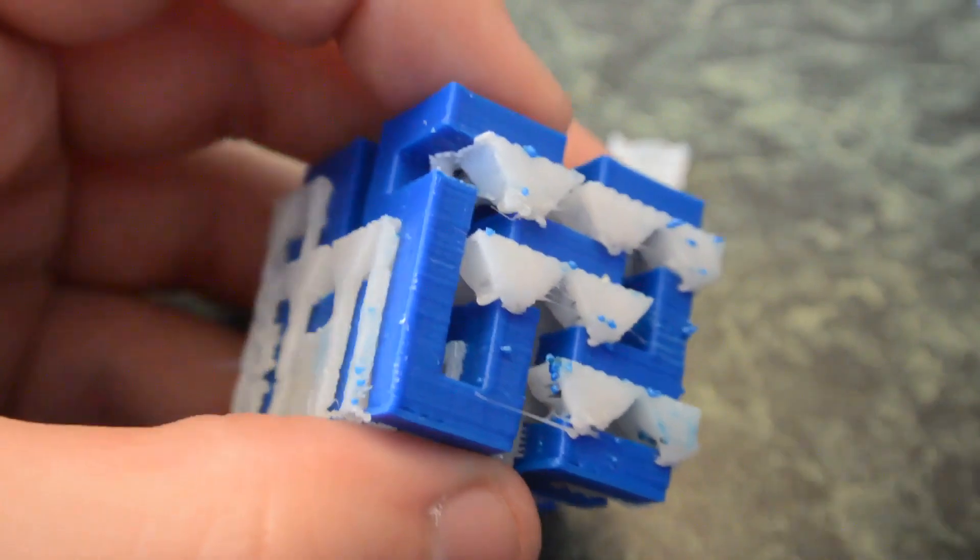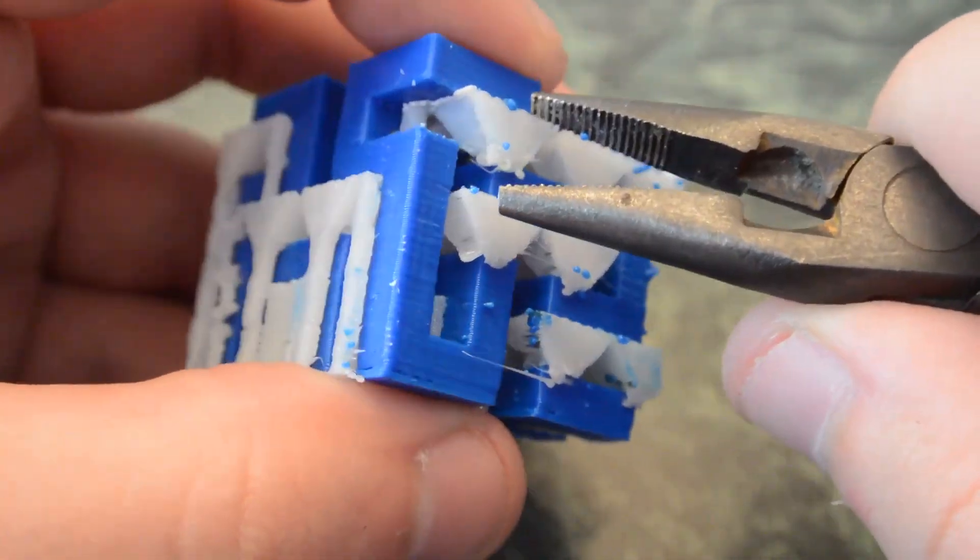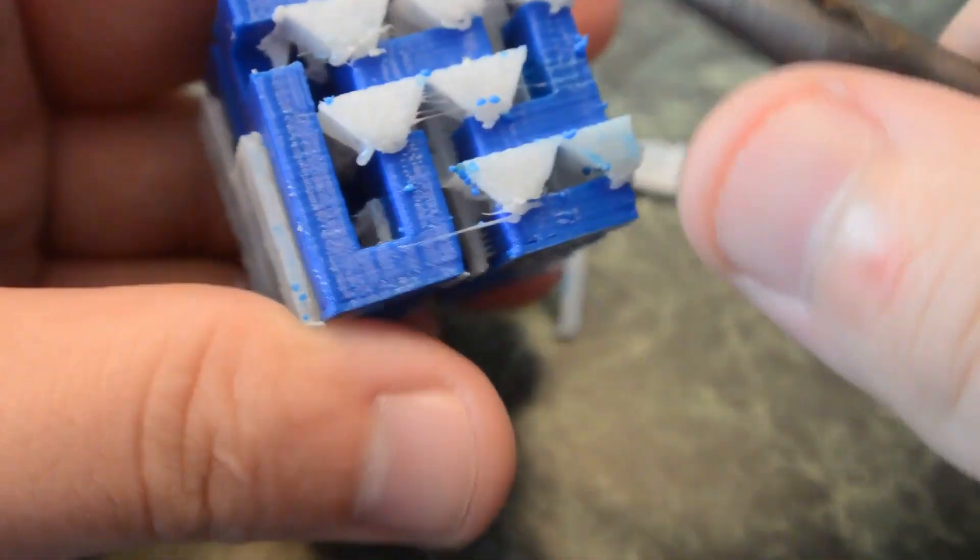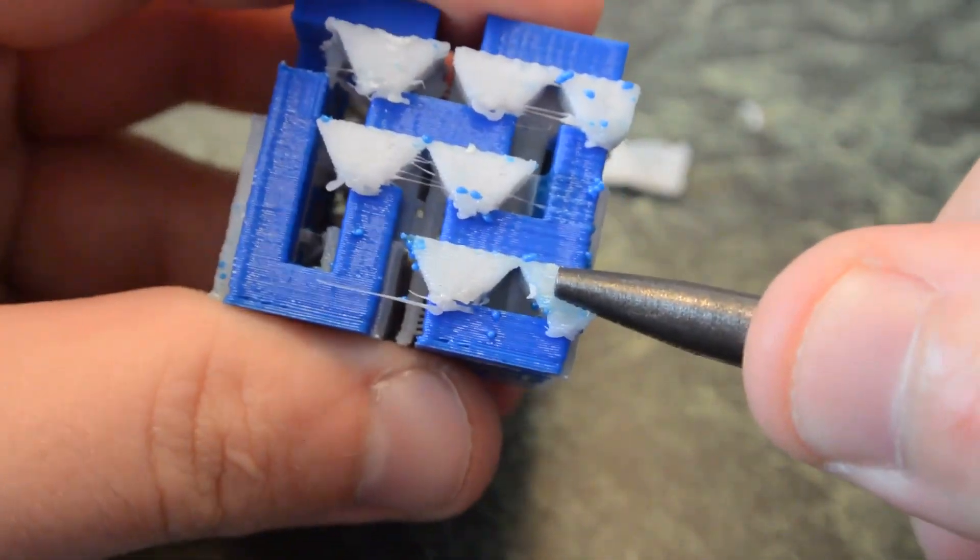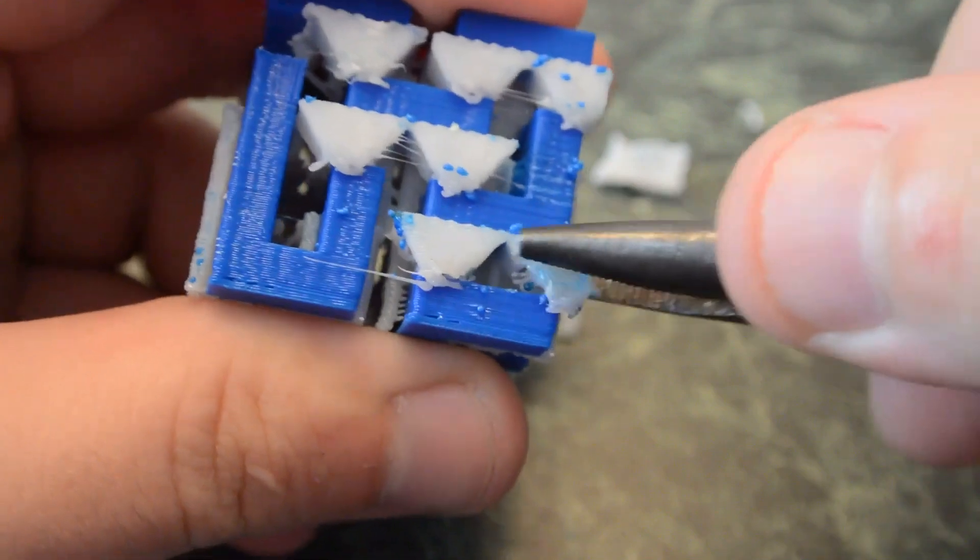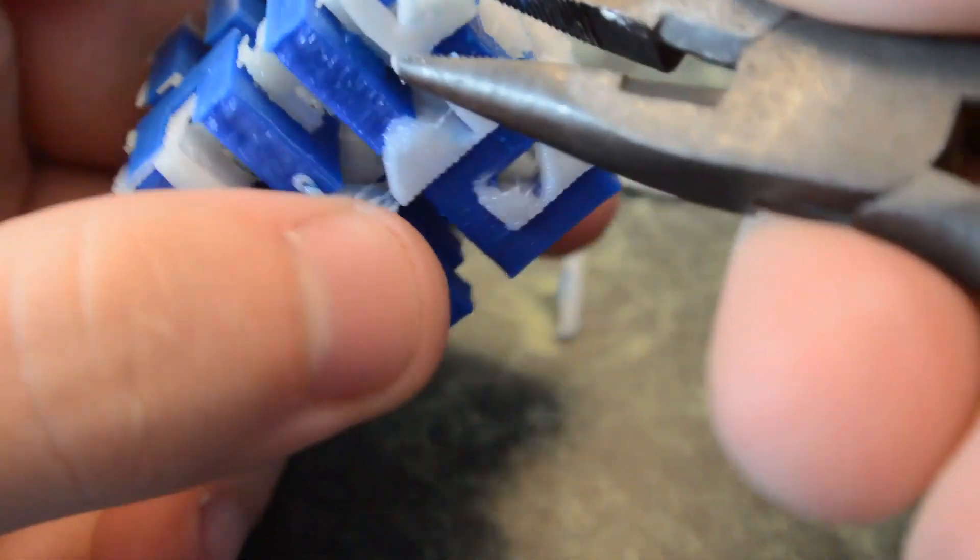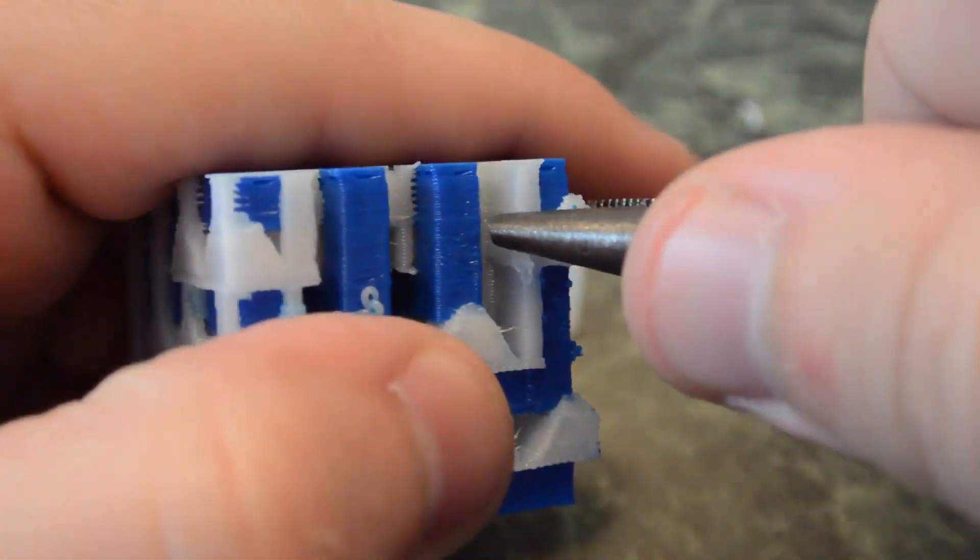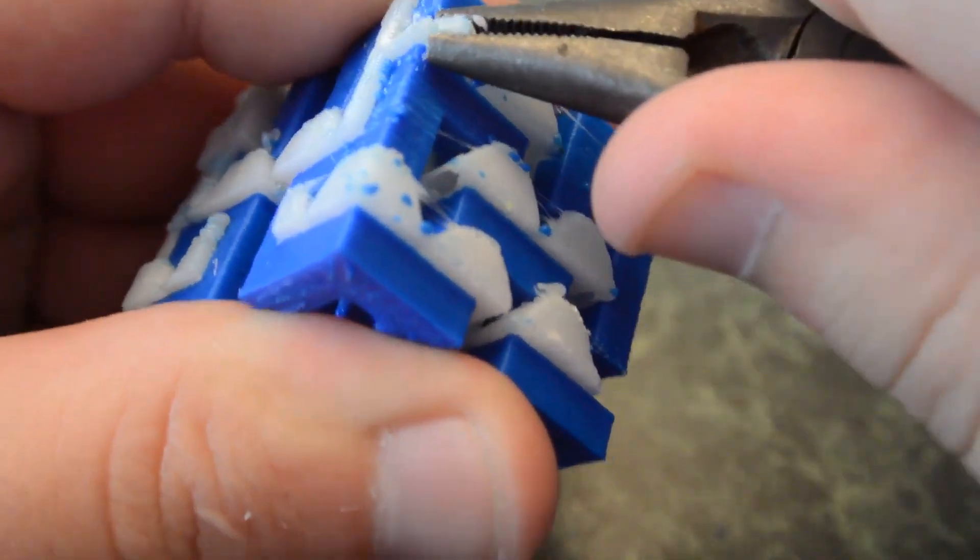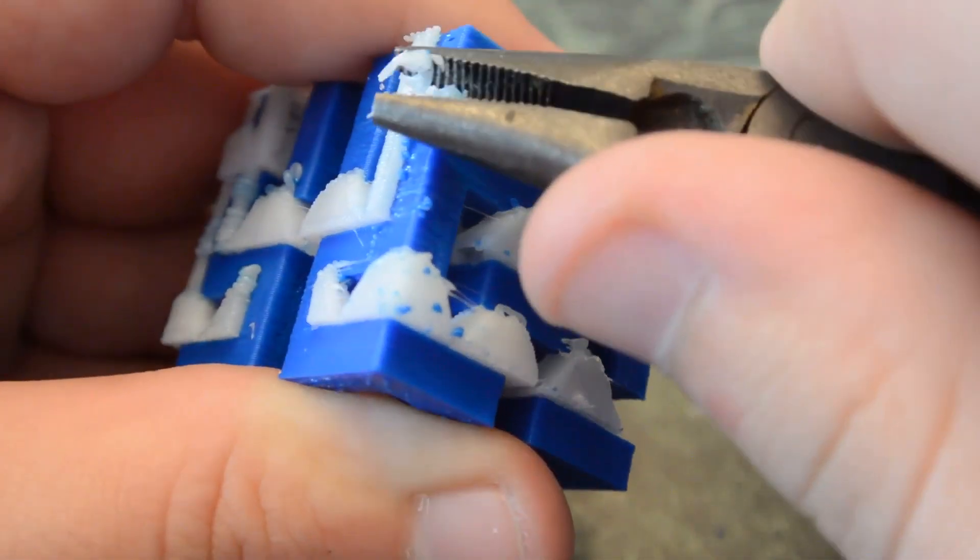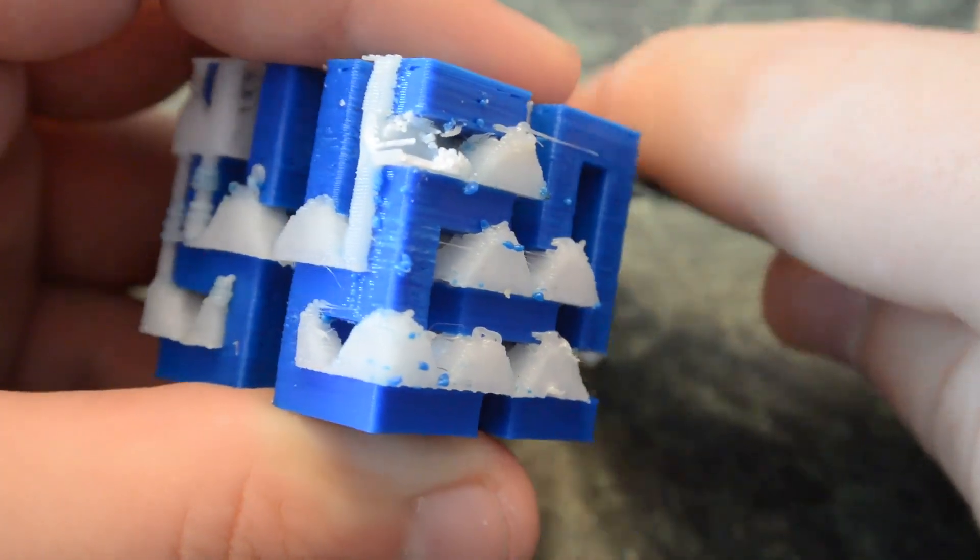So, this would be perfect even if you're not planning on dissolving this in the limonene. If you can just print your support material using the HIPS filament, that would make your life a lot easier. Let me see if I can remove a little bit more. See if we can get some better video of that. Yeah, this kind of just peels right away from the ABS. That is beautiful.